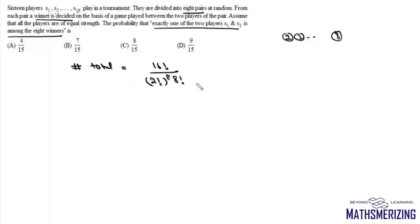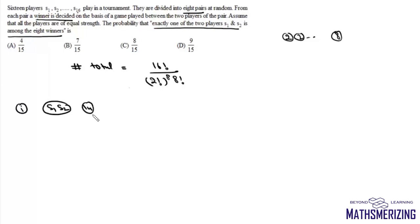That is our total number of cases. Now for the favorable case, when exactly one of the 2 players is among the 8 winners, we have to consider 2 possibilities. The first possibility is when S1 is paired against S2. If S1 and S2 are paired against each other, then exactly one of them will be a winner. That means we have to distribute the remaining 14 players into pairs of 2. So that will be 14! divided by (2!)^7 into 7!.